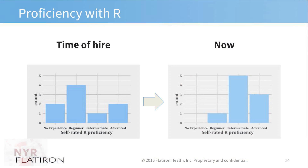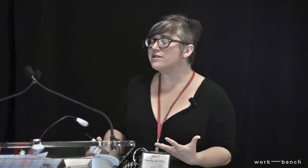Did these things work? Very small sample, admittedly, but yes, it worked. On the left is self-rated proficiency at time of hire, and on the right is a poll from last week. You can see that most people are calling themselves intermediate or advanced now. I've watched this change happen through watching people every day and doing code reviews, and it's been really exciting and rewarding to see.